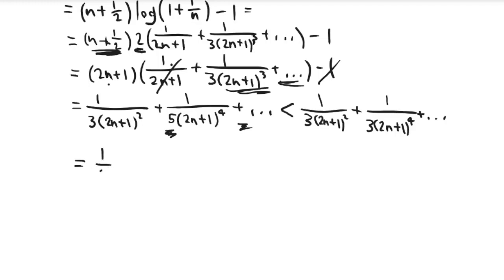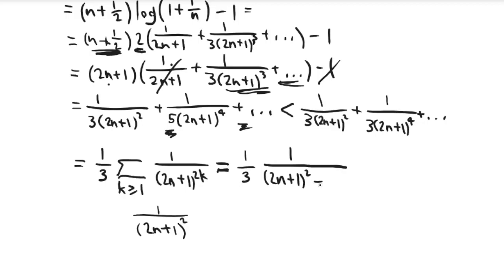Great. So that tells me that I'm bounded above by this expression, which is the same as sum k≥1 of 1/(3(2n+1)^(2k)). But now the series that we ended up with is a geometric series. It's a geometric series in 1/(2n+1)². And you can check that the limit of this series is 1/(3((2n+1)² - 1)). And this is what you get if you use the formula for geometric series and you simplify everything down. You just get this expression.